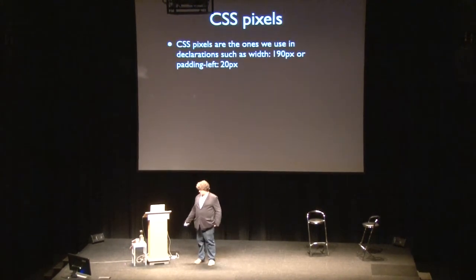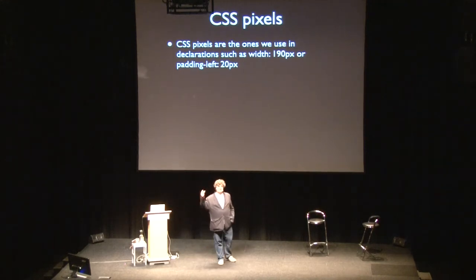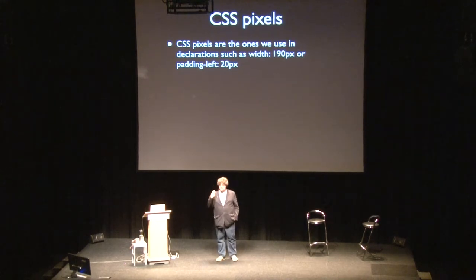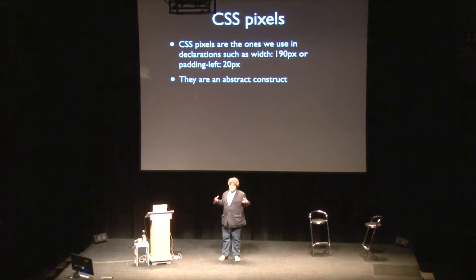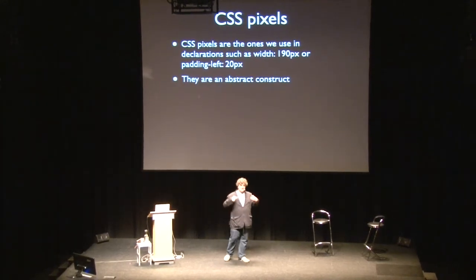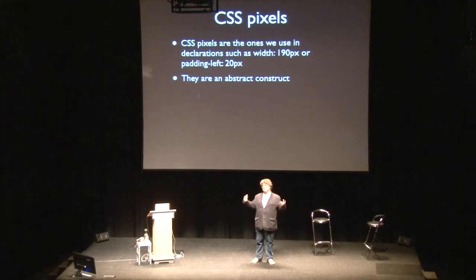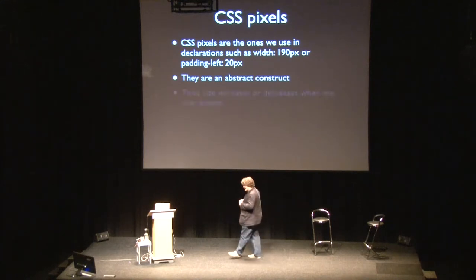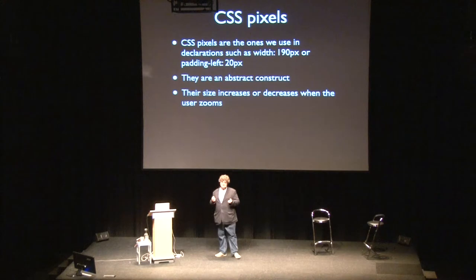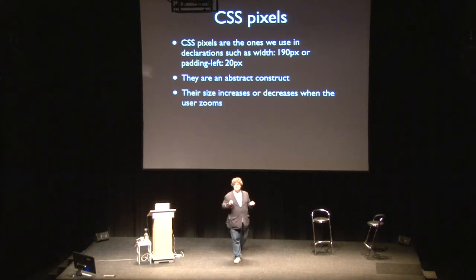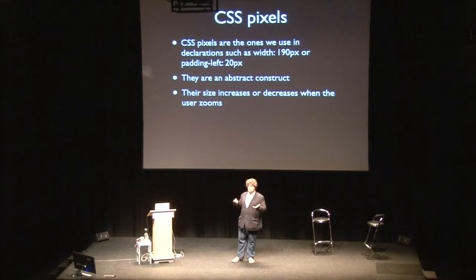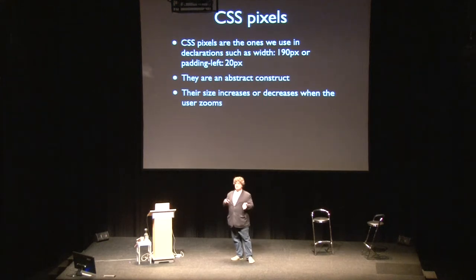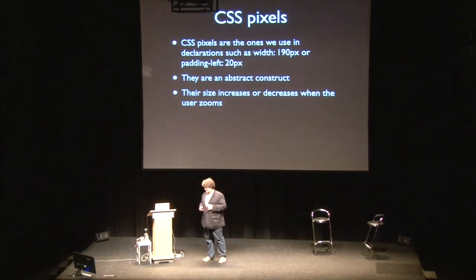CSS pixels are the ones we use when we use pixels in CSS — width 190 pixels, padding-left 20 pixels. They are basically an abstract construct created specifically for us web developers, so that we can create CSS layouts without worrying about complicated issues such as zooming. The fundamental thing about CSS pixels is that their size increases or decreases when the user zooms. That goes both on desktop and on mobile.